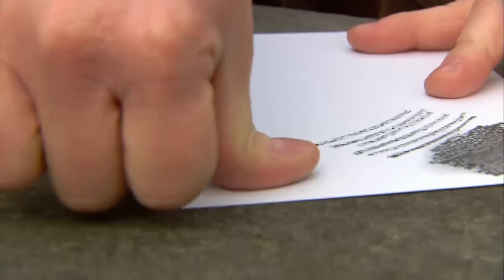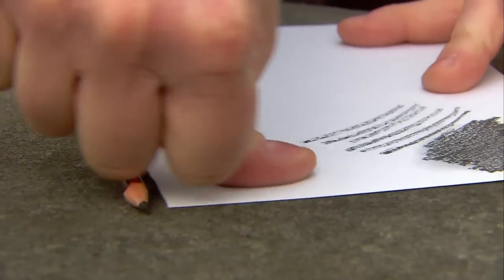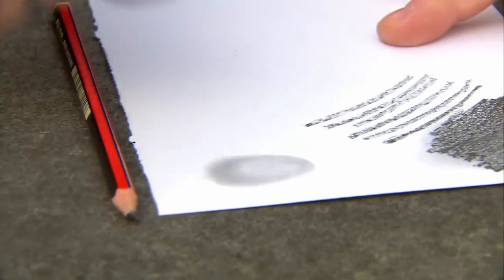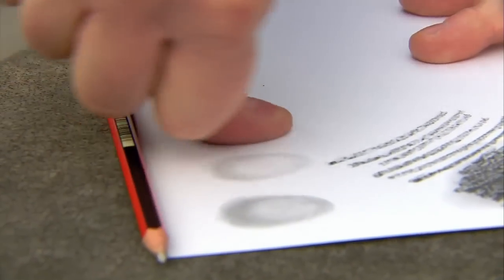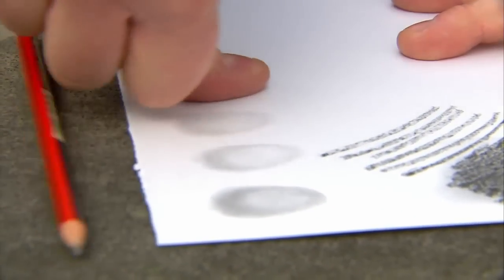If I then press that back onto the paper, millions of layers are peeled off. If I keep smudging my thumb across the paper, these layers of graphite get thinner and thinner.